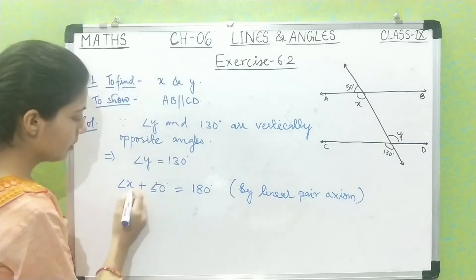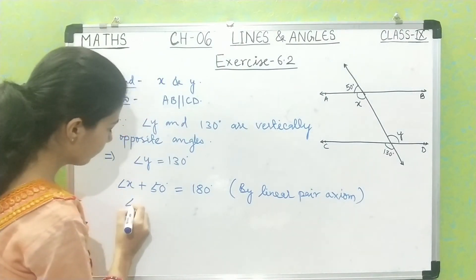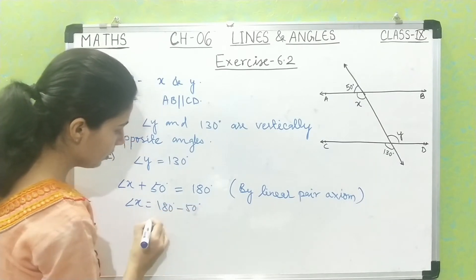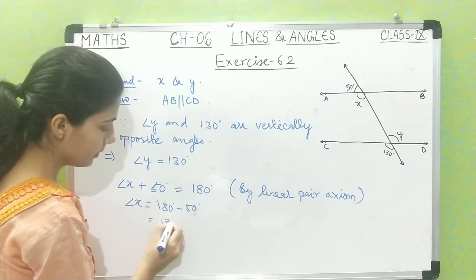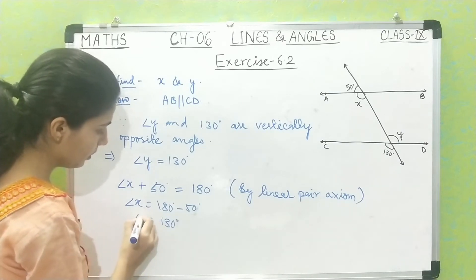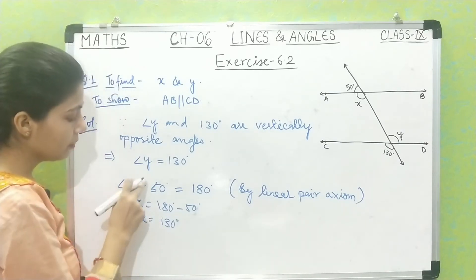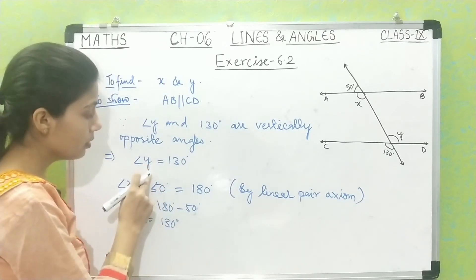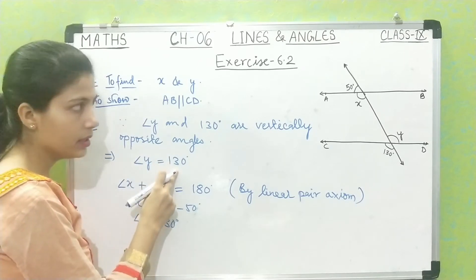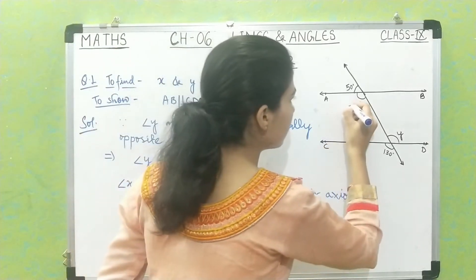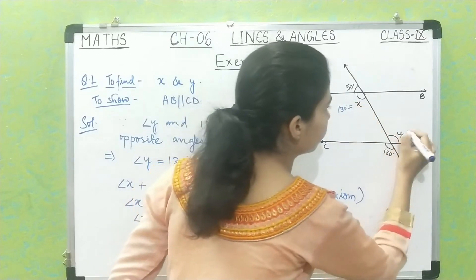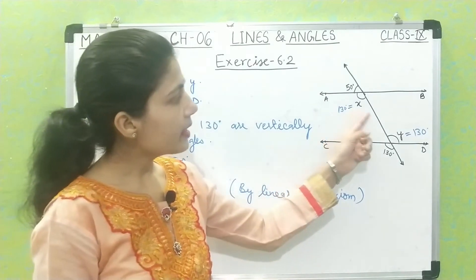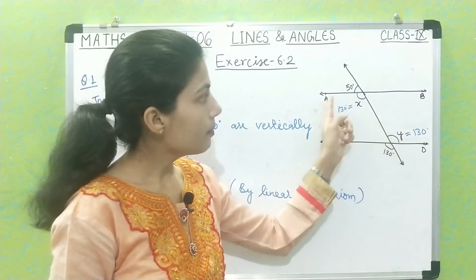We know that the sum of angles in a linear pair is always 180 degrees. By using the linear pair axiom, angle X plus angle 50 degree — these two angles are making a linear pair, so their sum will be 180 degree. So X will be 180 minus 50 degree, which equals 130 degree. So the value of X is 130 degree.